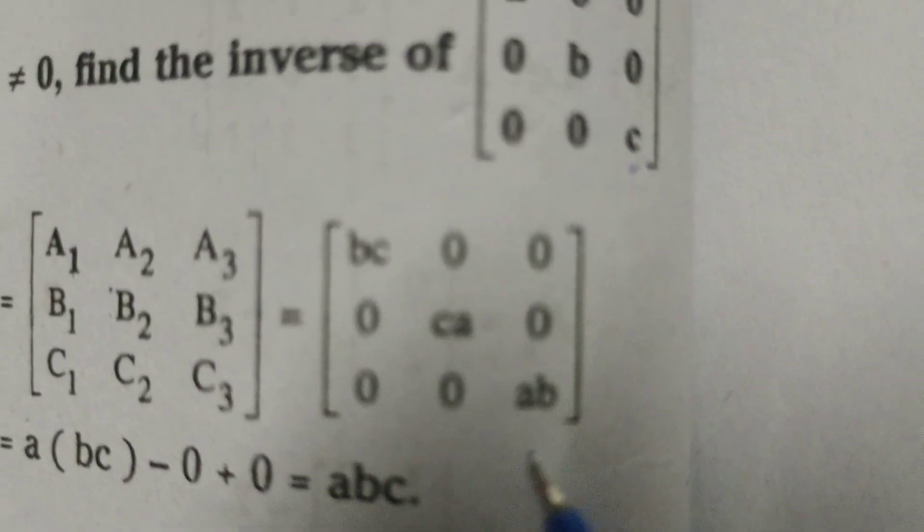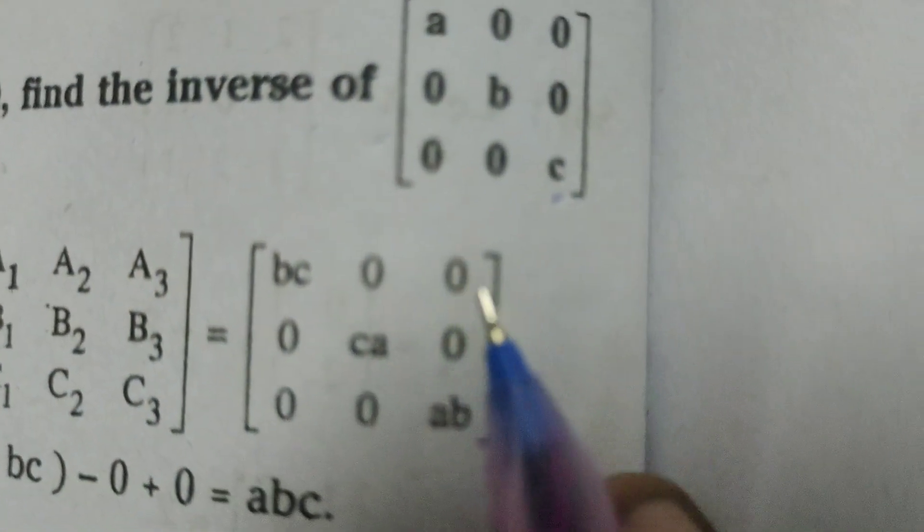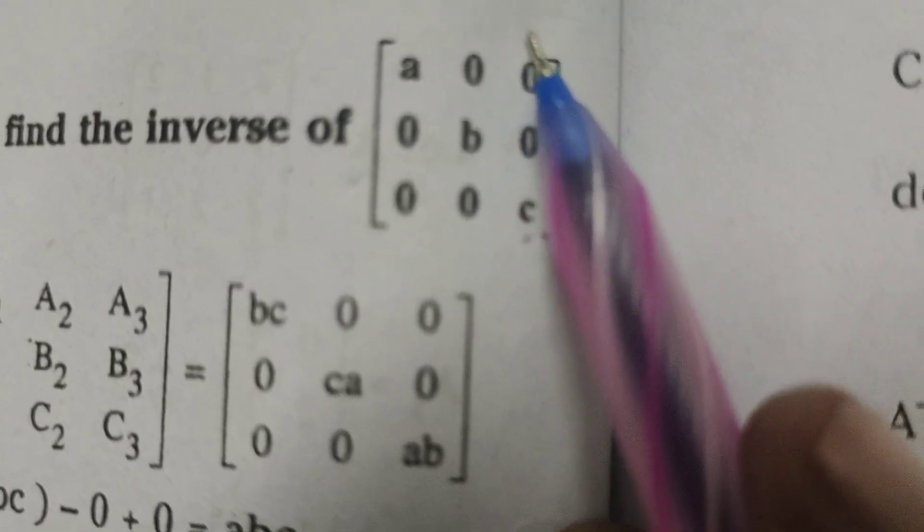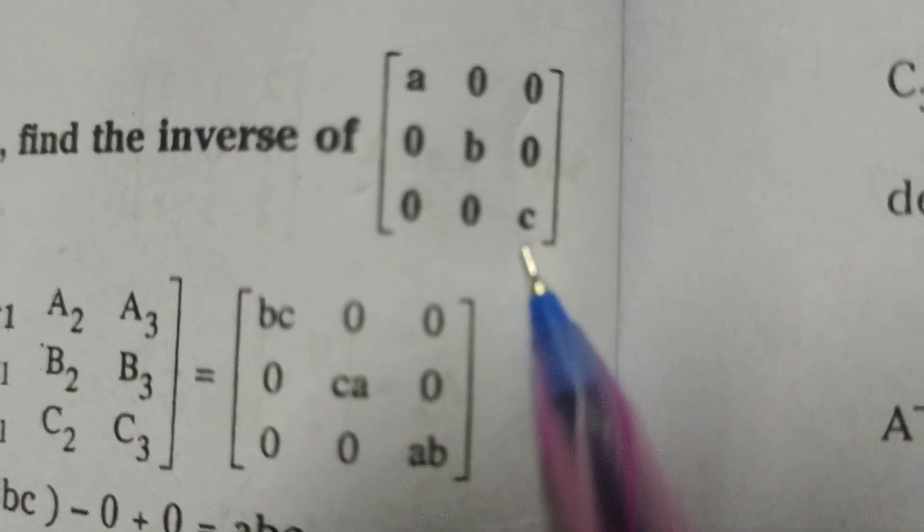0, again 0, 0, again 0, 0. Here c is there, c into except this column and this row, using ad minus bc, that is ab minus 0, we will get ab. This is the adjoint matrix.